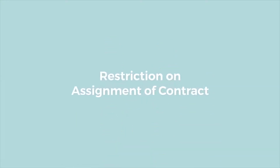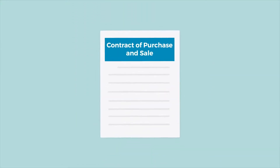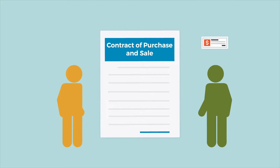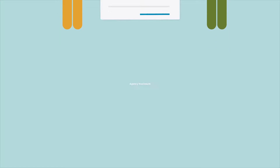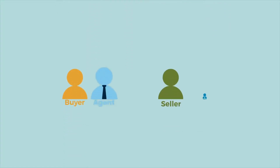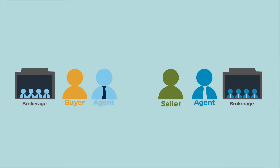Restriction on assignment of contract. The contract of purchase and sale provides that the contract cannot be assigned without the written consent of the seller, and that any profit from an assignment will be for the benefit of the seller unless otherwise agreed to by the buyer and the seller. Agency disclosure. In this section, both the seller and buyer's designated agents and respective brokerages, if any, are specified.